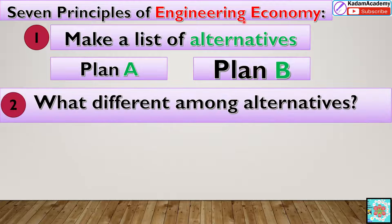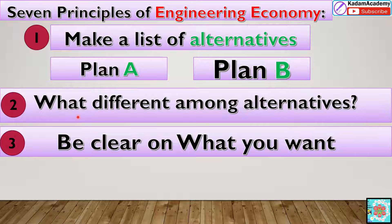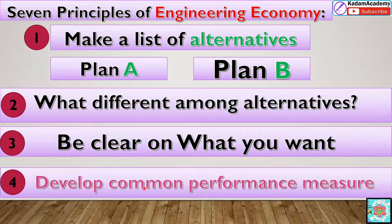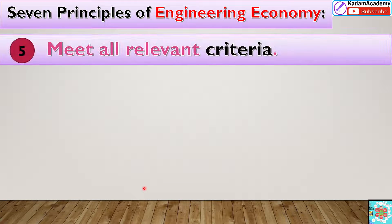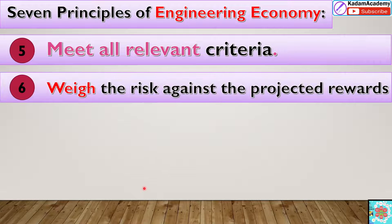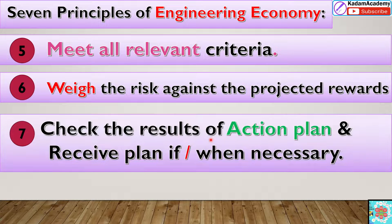Fifth, identify what you want and meet all the relevant criteria. Sixth, consider the risk against the projected outcome. Seventh, check the results of the action plan and revise if and when necessary.